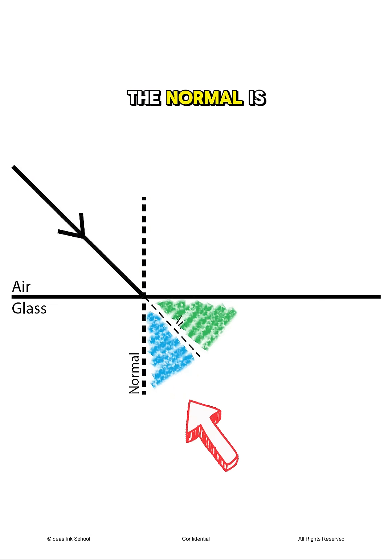The area nearer the normal is where light should be when it slows down and bends towards the normal. On the other hand, the outer area is where light will be if it speeds up and bends away from the normal.